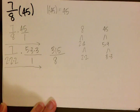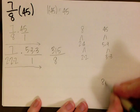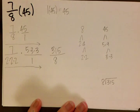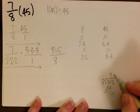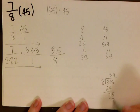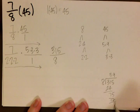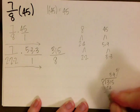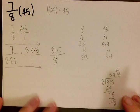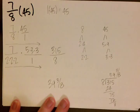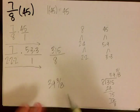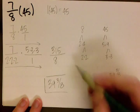The instructions told us that we want to change it back into a mixed number. So we go ahead and do 8 into 315. When we do that we get 39, which gives us 72 with a remainder of 3. Remember that we always use our remainder as the numerator and the divisor as the denominator. So our final answer is going to be 39 and 3 eighths. So 7 eighths multiplied by 45, or 7 eighths of 45, is 39 and 3 eighths.